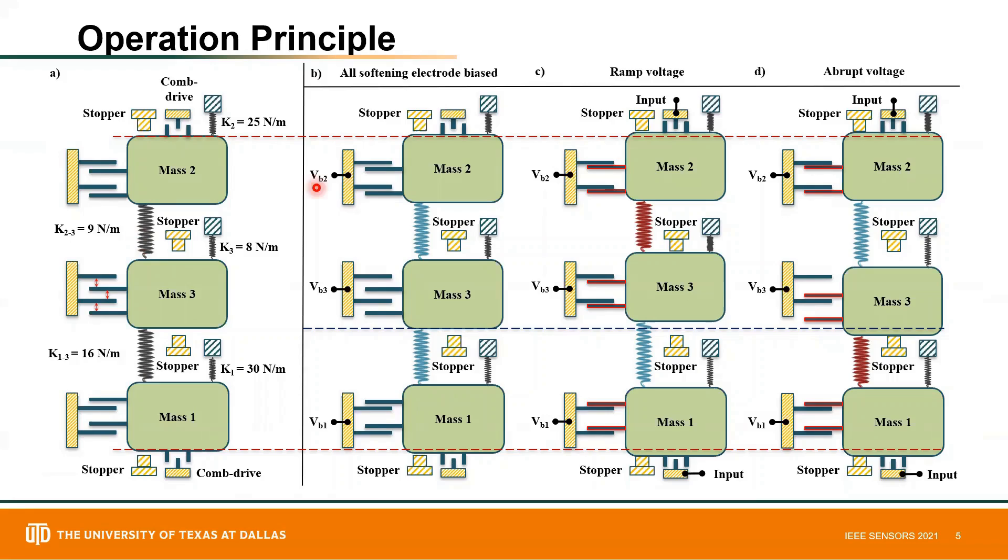To operate this device, first all softening electrodes are biased. This will result in each mass being closer to its instability or its pull-in point, with the more softly coupled element, mass two, closer to its pull-in point.